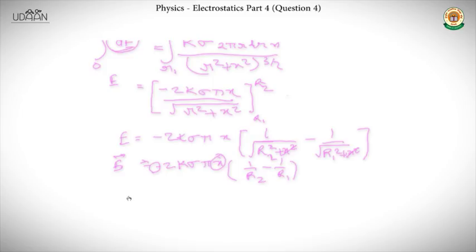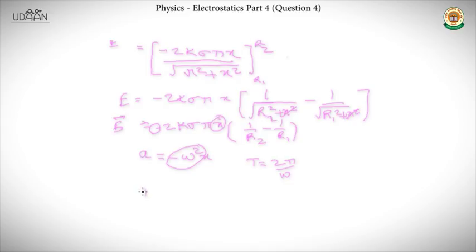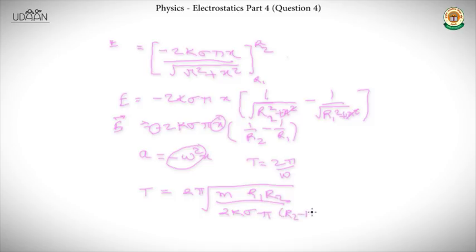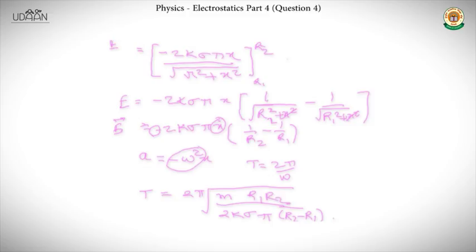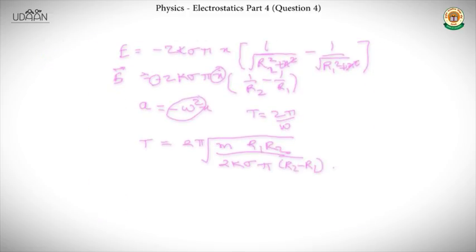Let's find the time period using the formula a = minus omega²·x to find omega. The time period works out using 2k·sigma·pi·(r2 minus r1). We multiply the electric field by the charge to get the force, then find the time period from there.